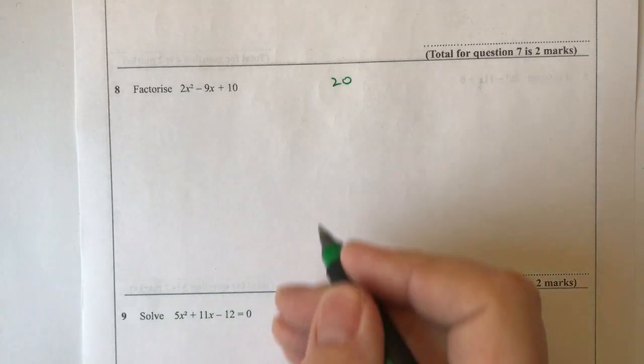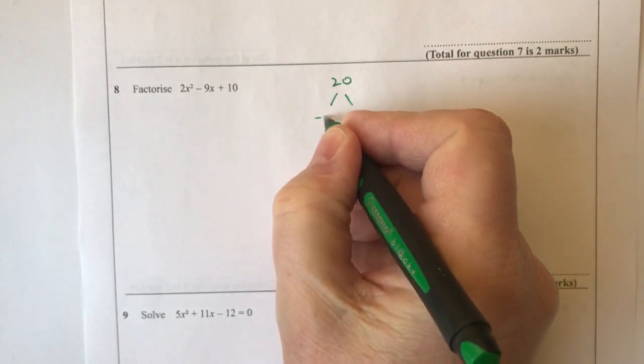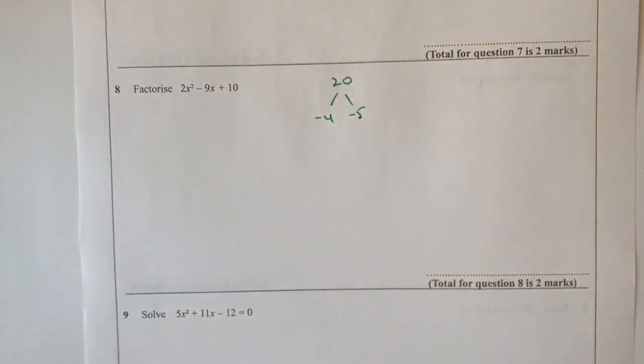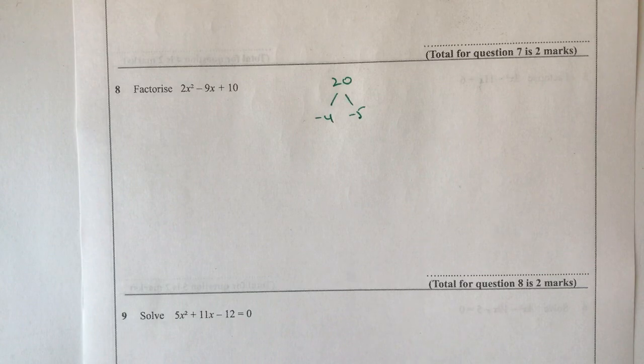The two that I'm going to actually choose is going to be minus 4 and minus 5, because when I multiply minus 4 and minus 5 together, I get positive 20. And when I add them together, I get minus 9.